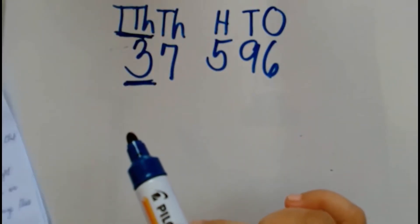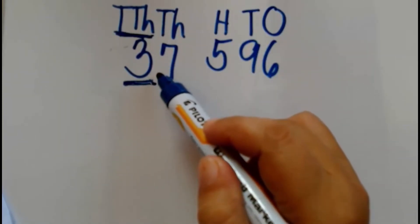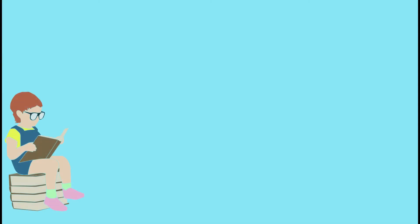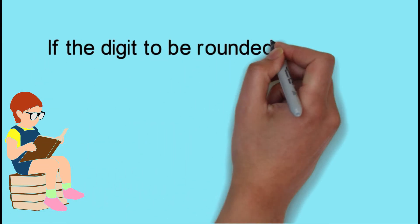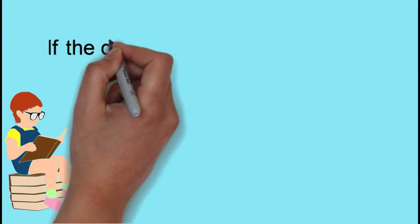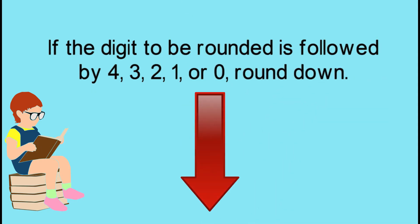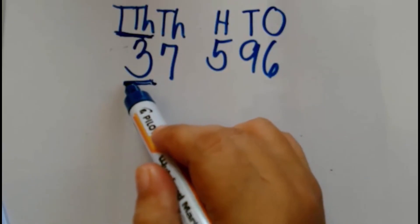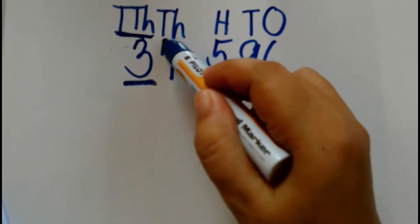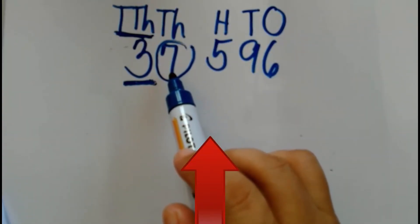Now that we have identified the digit to be rounded off, let's do Step 3, which is to identify the digit found at the right side of the digit we are rounding. Remember: if the digit to be rounded is followed by 5, 6, 7, 8, or 9, round up. If it is followed by 4, 3, 2, 1, or 0, round down. The digit found at the right side of 3 is 7. Since the digit we are rounding is followed by 7, we will round up.